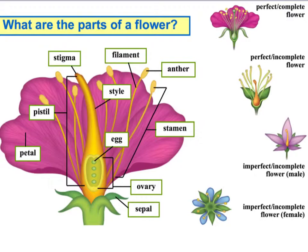Other plants produce separate male and female flowers on the same plant. For example, a single corn plant will have both male and female flowers. Remember that flowers are important in the angiosperm life cycle because they are the reproductive parts — without them, there wouldn't be other plants.